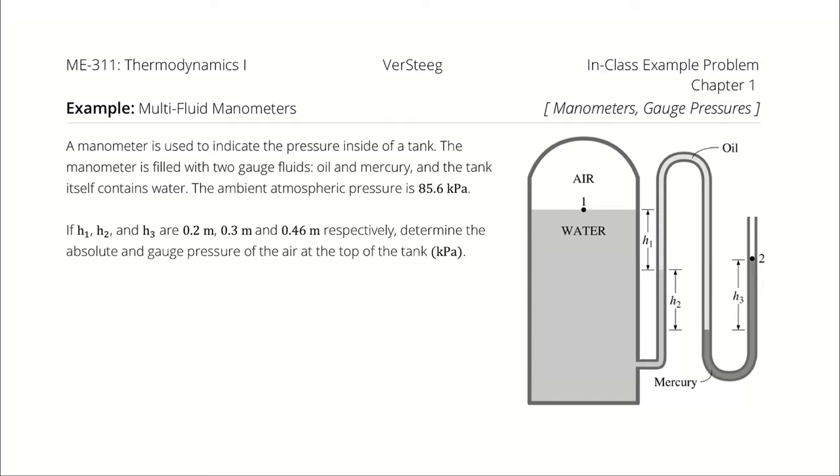A manometer is used to indicate the pressure inside of a tank. The manometer is filled with two gauge fluids, oil and mercury, and the tank itself contains water. The ambient atmospheric pressure is 85.6 kilopascals.